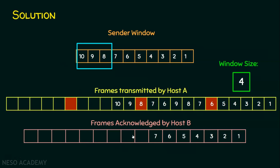Now it is time to acknowledge frame 8, but unfortunately frame 8 is also lost. Every sixth transmitted frame is lost — the first was frame 6 (6th transmission) and the next is the 12th transmission, which is frame 8. So the receiver will not acknowledge frame 8. The sender waits but receives no acknowledgement, then retransmits the entire current window: frames 8, 9, and 10.